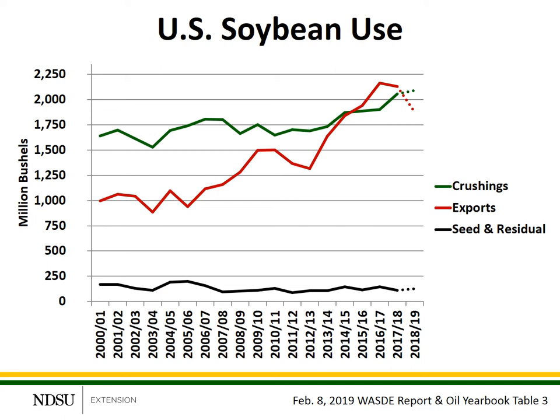Now let's take a look at soybean usage. This graph provides historical perspective on the three major categories of soybean use that USDA tracks. One of those is crushings — the green line — which represents domestic crush, where U.S. soybeans are crushed into oil and meal. The red line represents exports, and the black line on the bottom is seed and residual. The dotted lines on the far right-hand edge represent the current USDA forecast for each of those values. Crushing usage has been slowly increasing since the early to mid-2000s. Exports have grown very rapidly from the mid-2000s, and seed and residual tends to remain relatively stable.